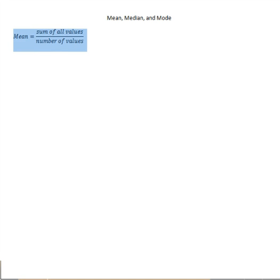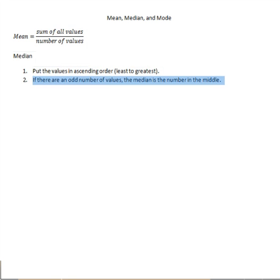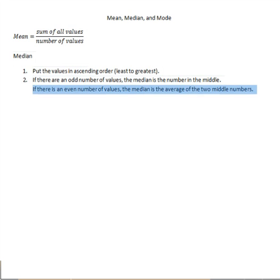Now for the median, first place the values in ascending order from least to greatest. Once in order, the median is the value directly in the center if there's an odd number of values. If there's an even number of values, you can't get to a single number, so it's the average of the two middle numbers.